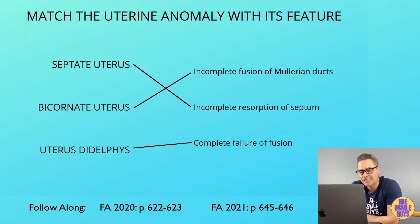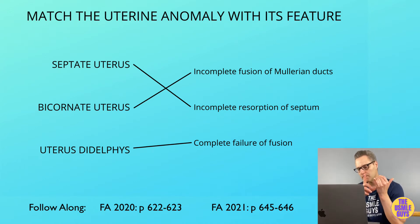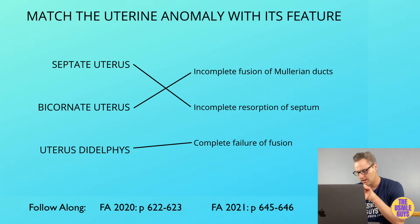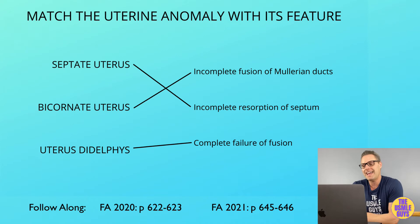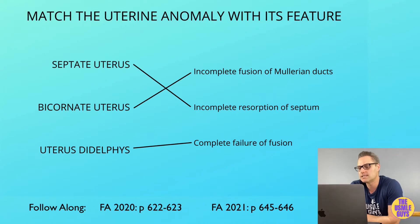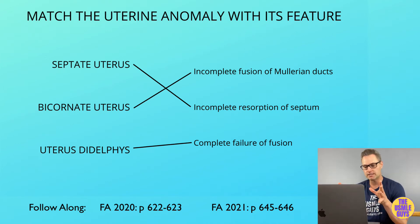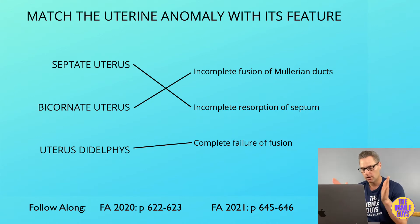If we get a female who has fully developed secondary sexual characteristics but fails to experience her first menses, we need to consider Müllerian agenesis. There are also Müllerian duct abnormalities to be aware of: a septate uterus, a bicornate uterus, and uterus didelphys. Any of these will result in decreased fertility and increased risk of pregnancy complications. The septate uterus is caused by incomplete resorption of the septum and can be treated with a septoplasty. The bicornate uterus is caused by incomplete fusion of Müllerian ducts. Uterus didelphys is a double uterus, cervix, and vagina due to complete failure of fusion.